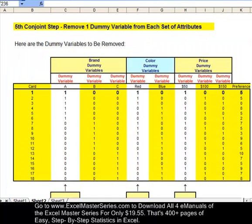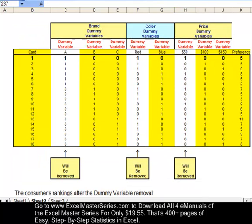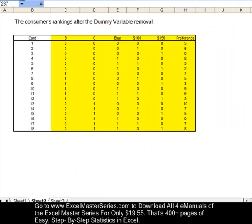The fifth step is to remove one dummy variable from each set of attributes. I'm highlighting the dummy variable that I'm going to take out of the data. I'm just going to delete all this data right out. Dummy variables brand A, color red, and price $50 are getting removed. I'm taking those three columns of data right out. After I take those columns of data out, here's what the data looks like. And I'm going to run a regression on this data right here.